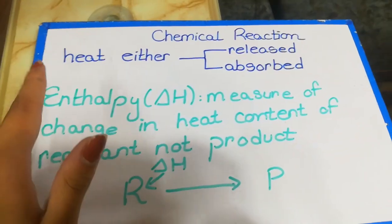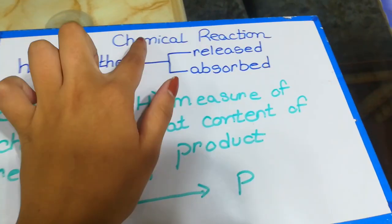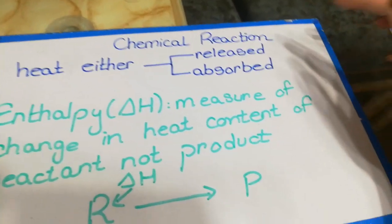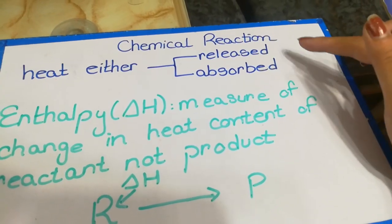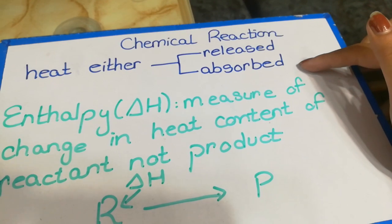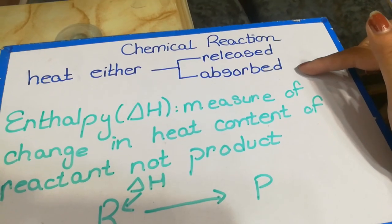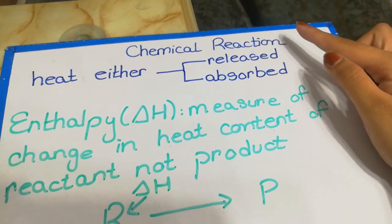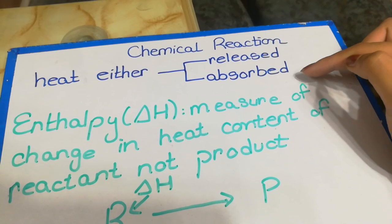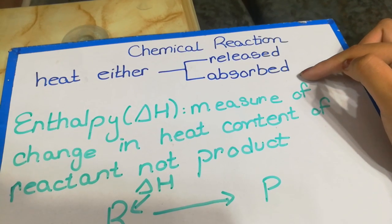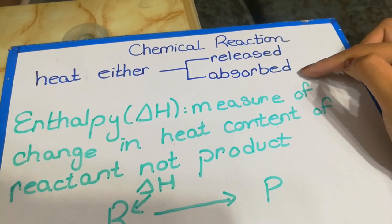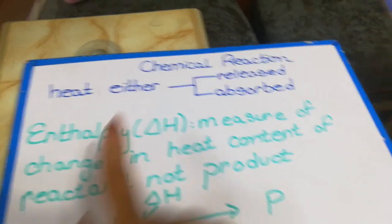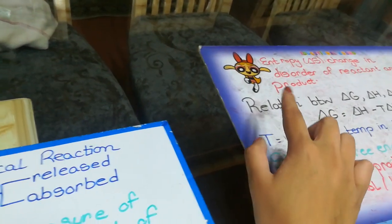Heat in a chemical reaction can take place by two means: heat can either be released or heat can be absorbed. When heat is released, the reaction will be exothermic, and when it is absorbed, it is endothermic. We are going to study two types: one is enthalpy and one is entropy.